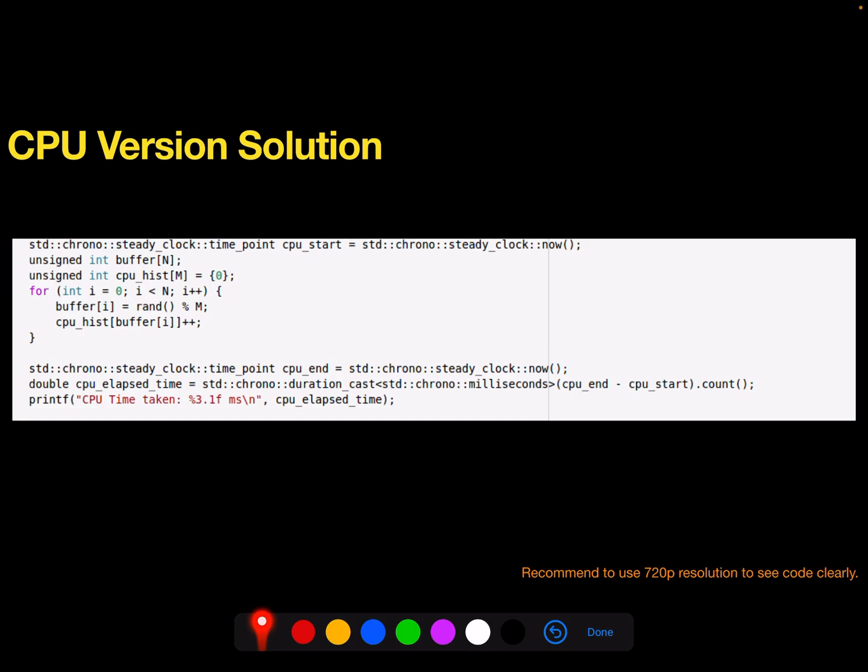To solve this in CPU is very straightforward. We just have four loop iterations. Here we can do generating the numbers and store them in histogram at the same time. Here for each i-index, I generate random numbers based on the m category. Then we directly use the i-index buffer values and put it into the histogram's increments count. Pretty straightforward.